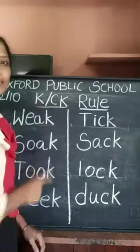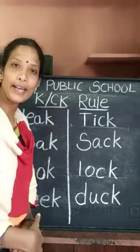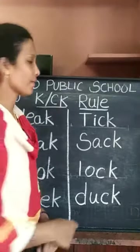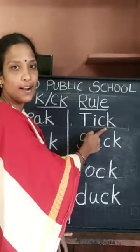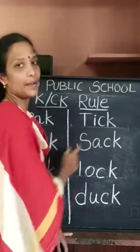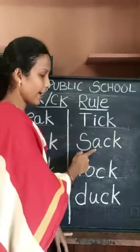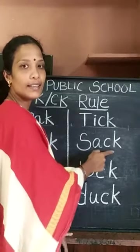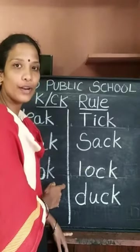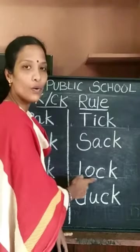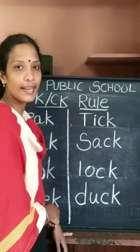Children, K makes the K sound, and CK also makes the K sound. When we get only one vowel in the word and it ends with the K sound, write CK. Write CK. When we get one vowel in the word and a K sound, write CK.